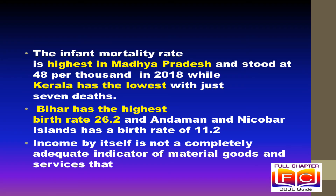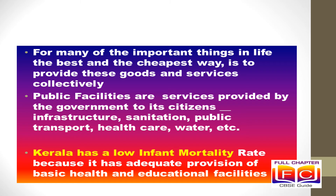Bihar has the highest birth rate. So income by itself is not a completely adequate indicator of material goods and services that citizens are able to use. For example, normally, our money cannot buy us a pollution-free environment. Our money may not be able to protect us from infectious diseases. There are many things that are not easily measured, but they mean a lot to our lives. Very often, these things are ignored. For many of the important things in life, the best and the cheapest way is to provide these goods and services collectively.